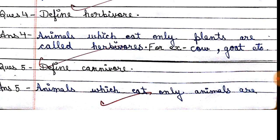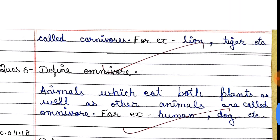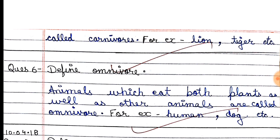Next, define carnivore. Animals which eat only other animals are called carnivores. Examples are lion, tiger, and wolf.